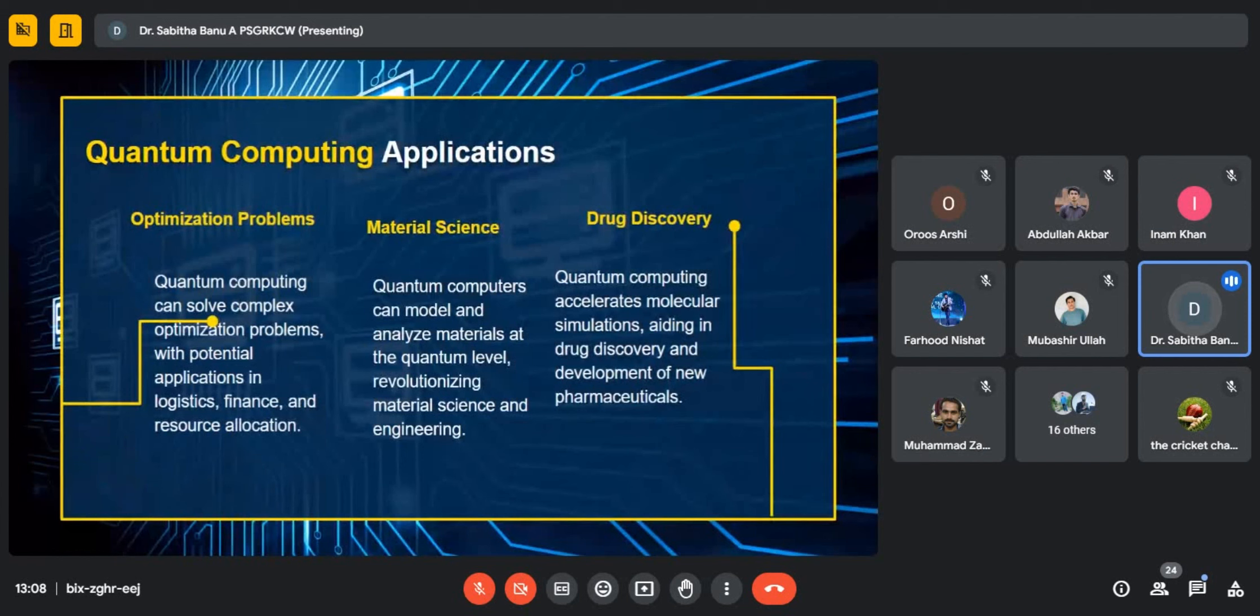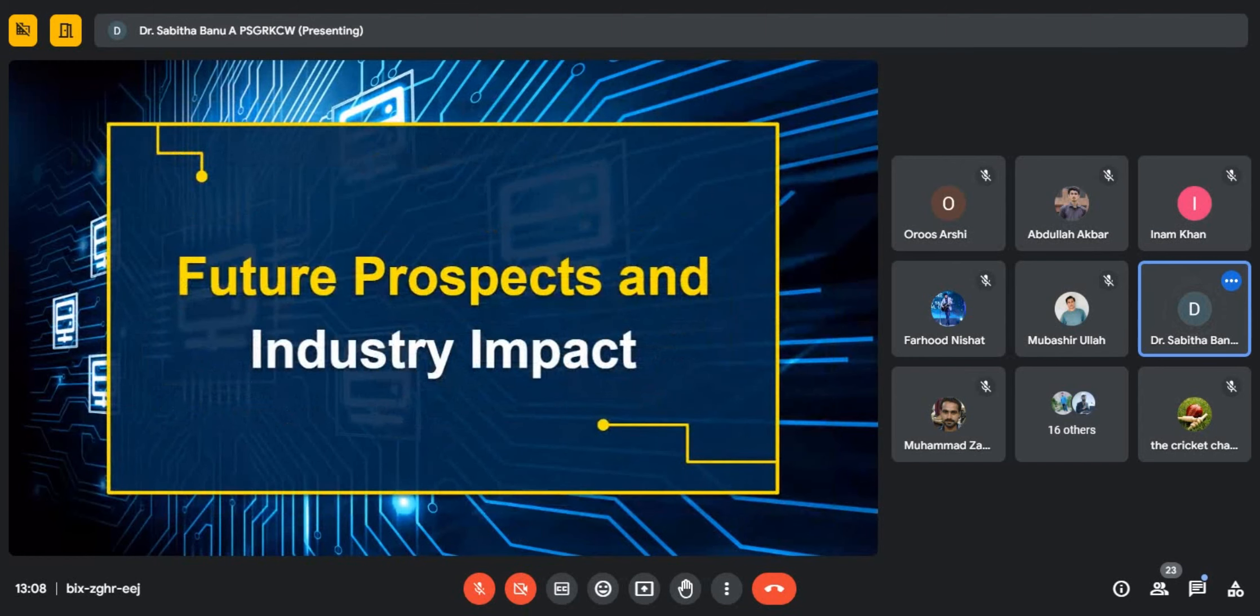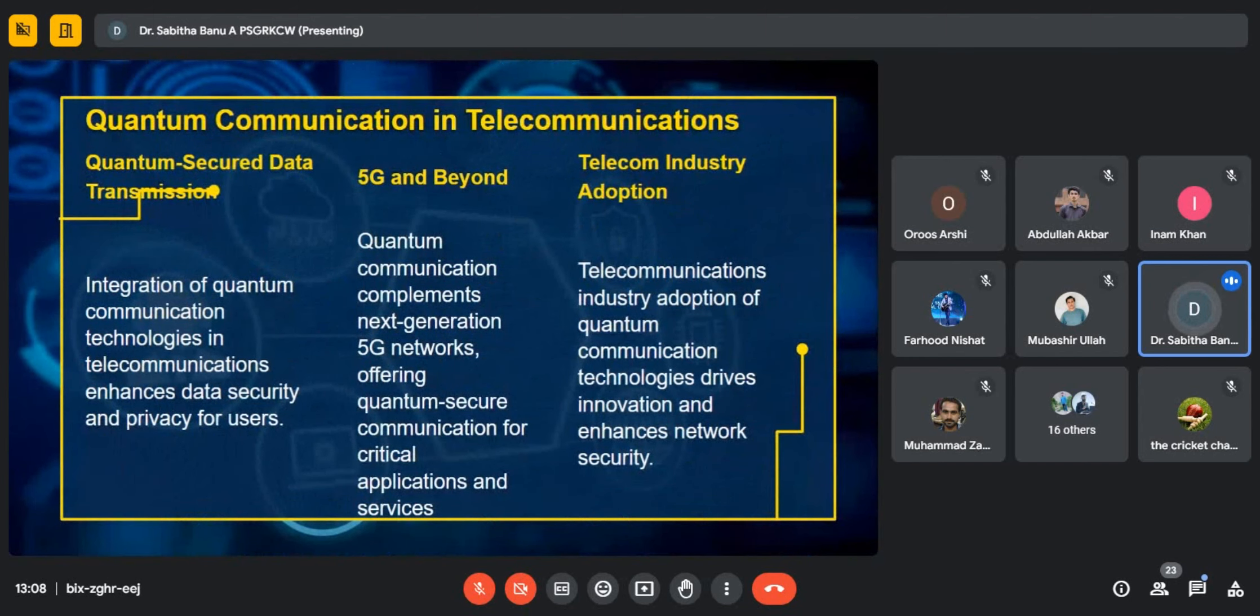As I told you, quantum computing is a booming technology. Everyone starts to explore the concept of physics and mechanics in all research areas. Particularly, quantum computing is applied in optimization, finding the best way to solve problems, and it is also used in material science domain, then for drug discovery. If we talk about communication, it is used in all the telecommunication industry, in 5G and 6G for achieving secure data transmission. Privacy is also secured while data transmission.